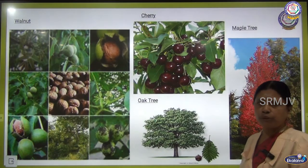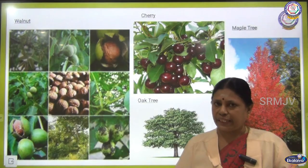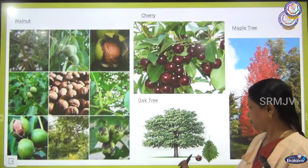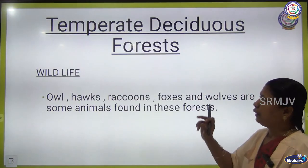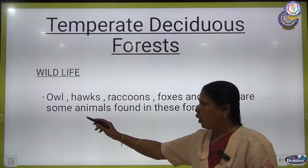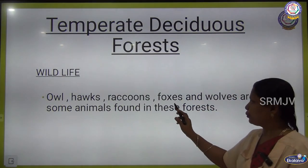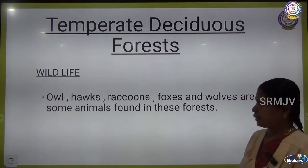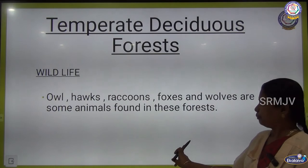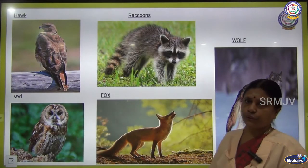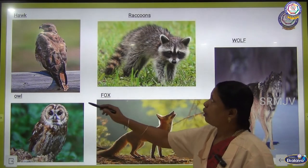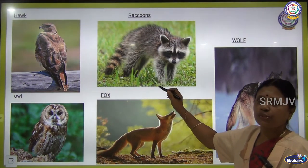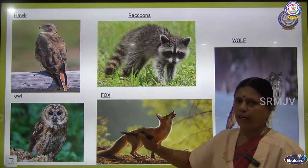From the maple tree, syrup is extracted — it is like honey and is used in food products. Animals in the temperate deciduous forest include owl, hawks, raccoons, foxes, and wolves. You can see pictures of hawk, raccoons — which is a type of mammal with fur — wolf, fox, and owl.